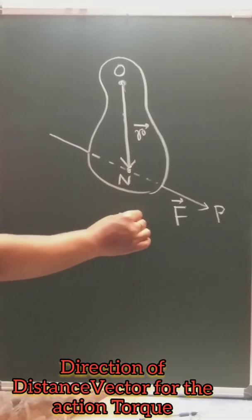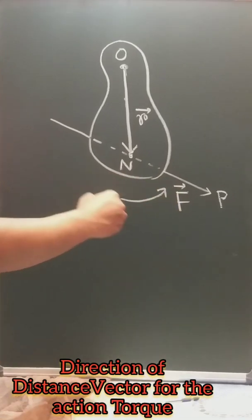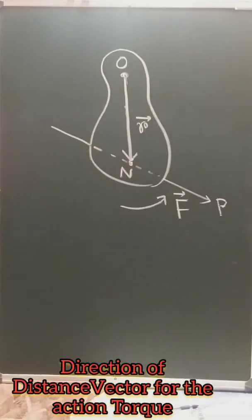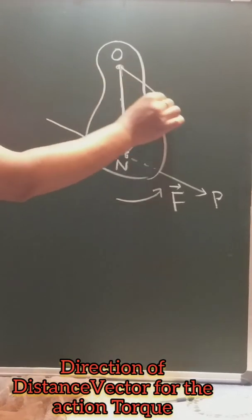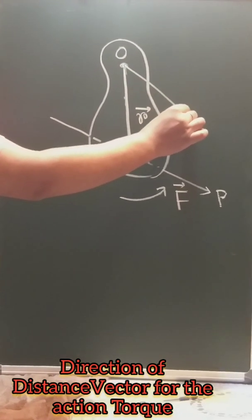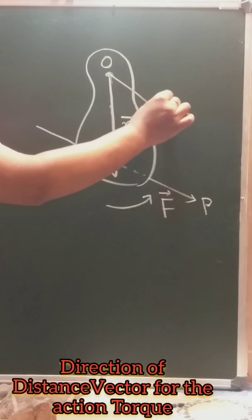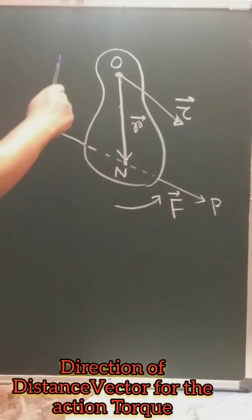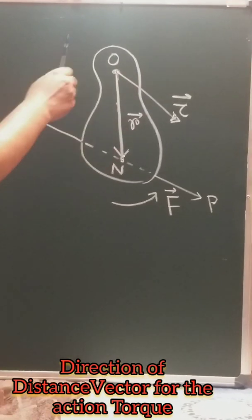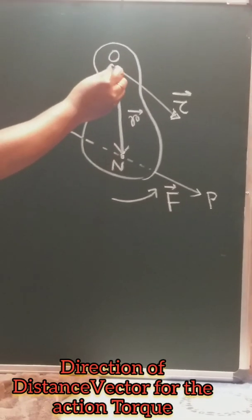the body will rotate in the anti-clockwise direction because a torque acts in this direction. The torque will act outwards, which means if the body exists in this plane, the torque will be acting outwards.